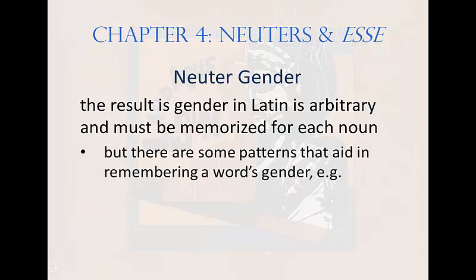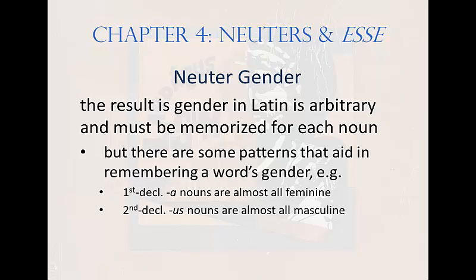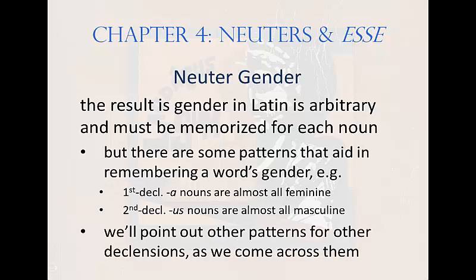Patterns do exist that can aid in memorizing a word's gender. First declension nouns with a short a in their nominative singular are almost always feminine. Second declension nouns ending in us in their nominative singular are almost always masculine. As we study other declensions and see patterns which can help in memorizing gender, we'll point them out.